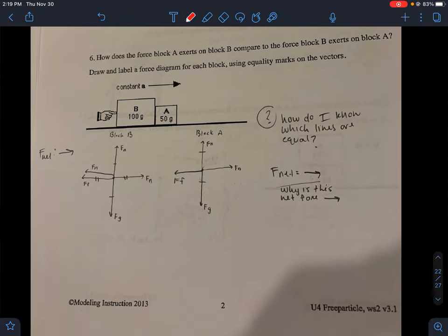For six here, how do I know which lines are equal? Well, so in this case, we're moving at a constant acceleration, meaning there's going to be an overall force, unbalanced force, or net force going to the right. So there's going to be more overall force going to the right. And the blocks are not moving vertically, so the upward forces will equal the downward forces.